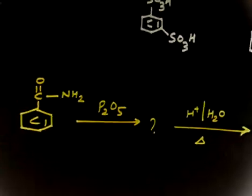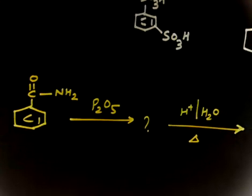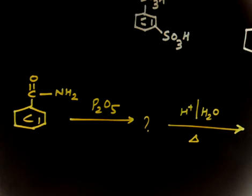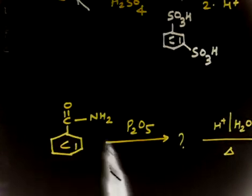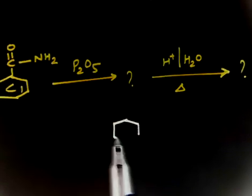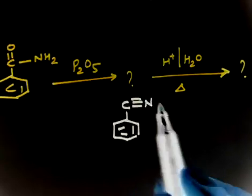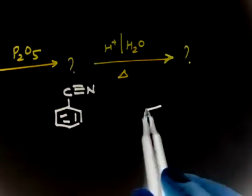Let us write the product for the following reaction. We have an amide that is treated with P2O5 and then hydrolysis. P2O5 we use as a dehydrating agent. So from here if you remove H2O, you will have C triple bond N, that is nitriles. After the first reaction you will have a nitrile, and if you do hydrolysis, you will have CN will be converted into COOH.